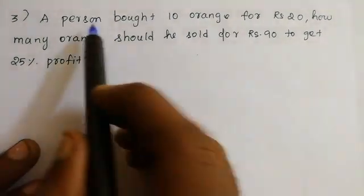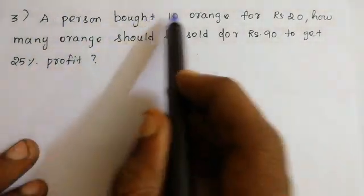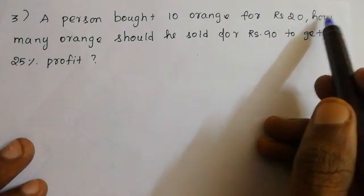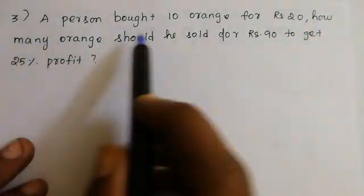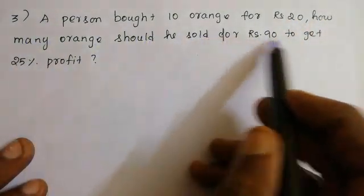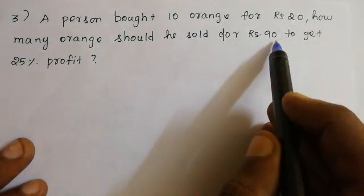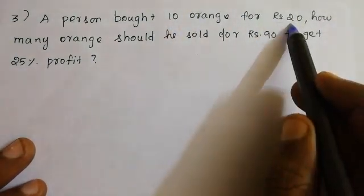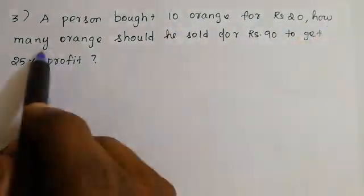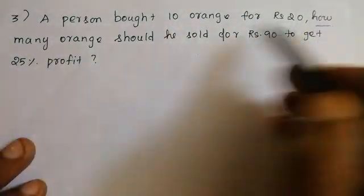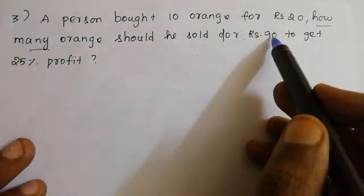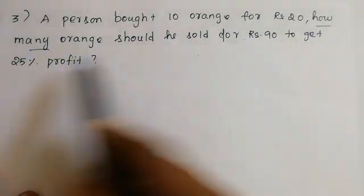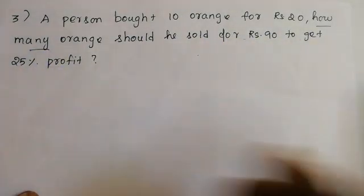If a person bought 10 oranges for 20, how many oranges should be sold for 90 to get 25% profit?